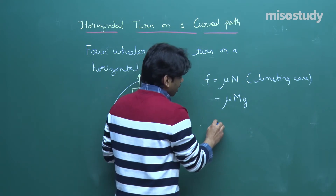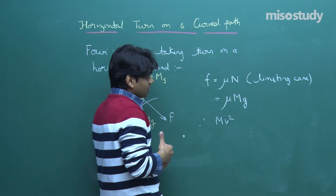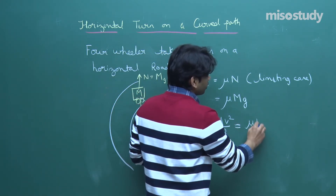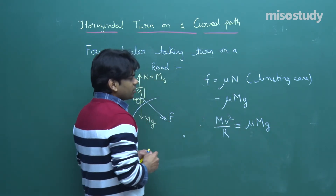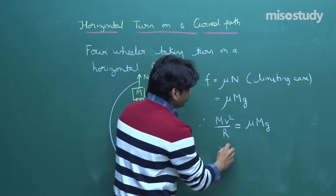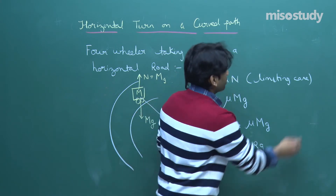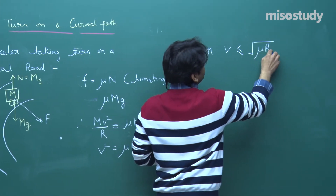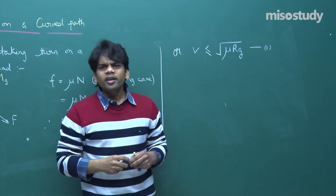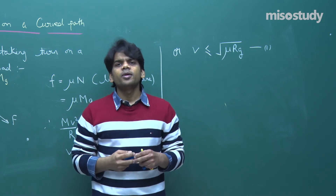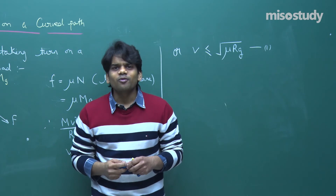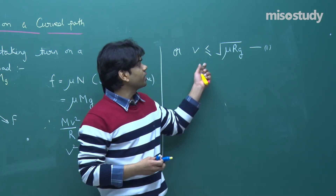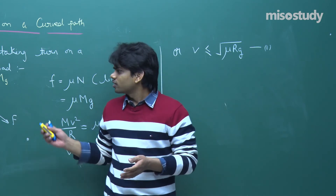Setting Mv²/R = μMg at the limiting case, we get V² = μRg. Therefore V ≤ √(μRg). This is the most important result — the maximum safe speed for a car taking a turn on a horizontal road. In board or competitive exams, questions may ask for maximum speed or the required coefficient of friction.